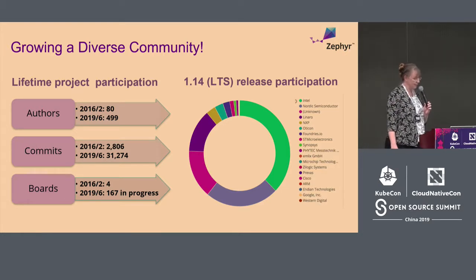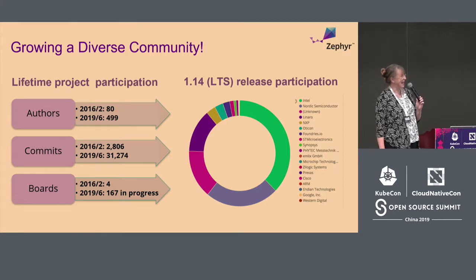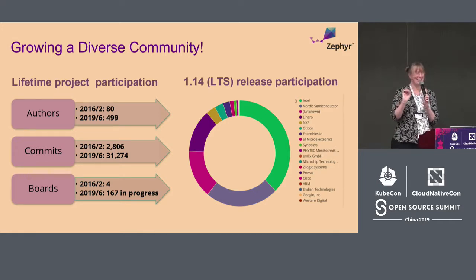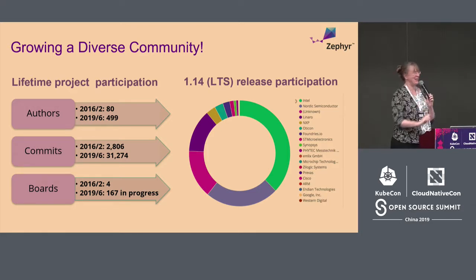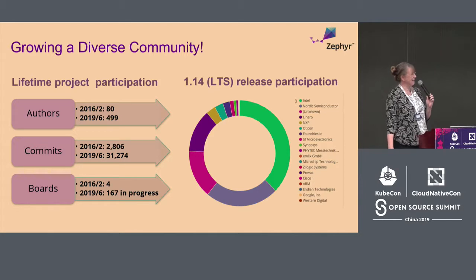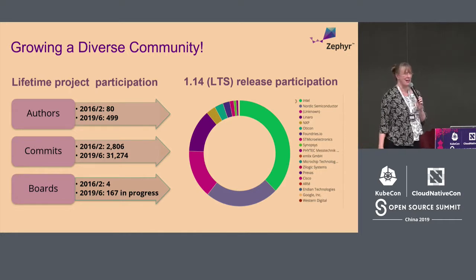From the growth perspective, last week when I checked there were 500 contributors, and then this morning when I checked there were 499 — somehow one ID merged or something happened. I'm eagerly waiting to see the next new contributor on GitHub because they will become the 500th. We've now passed 31,000 commits — it's not Linux, but it's about a tenth of the rate of Linux, which is pretty healthy for the embedded space.